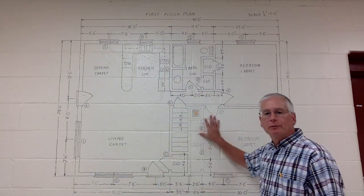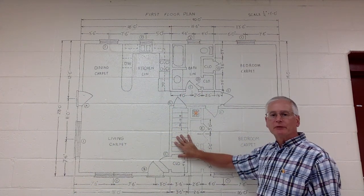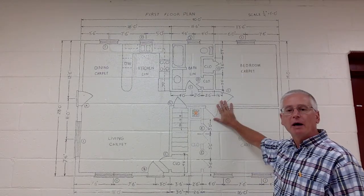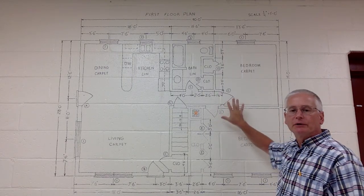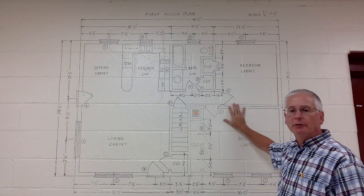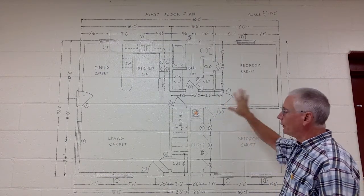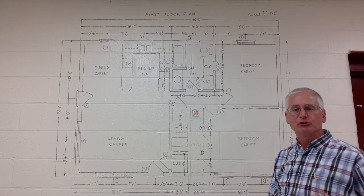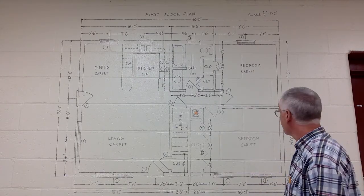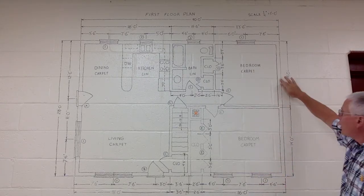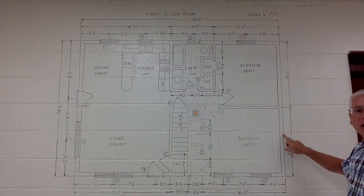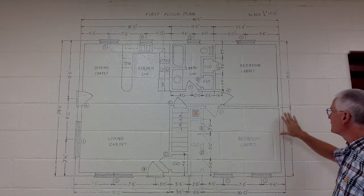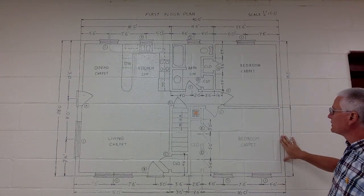Welcome. Let me show you around another floor plan. This is a floor plan of a house drawn on the wall in my classroom. I want to go over some more of the symbols on it so that you'll see some additional symbols. The wall — parallel lines running around the outside of the house — represents the wall.